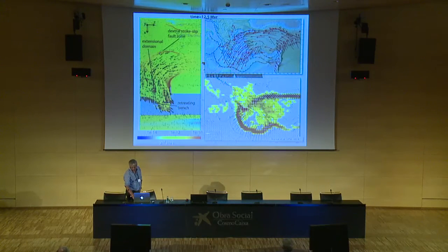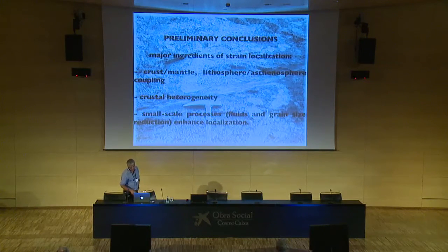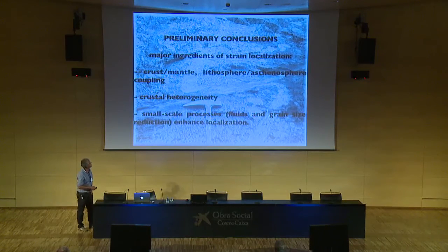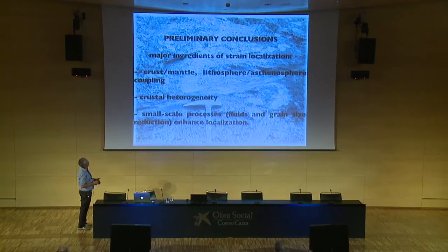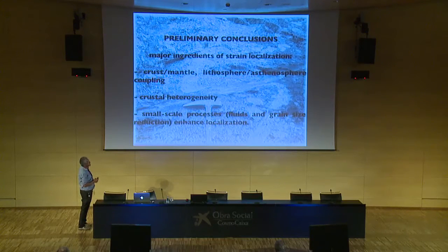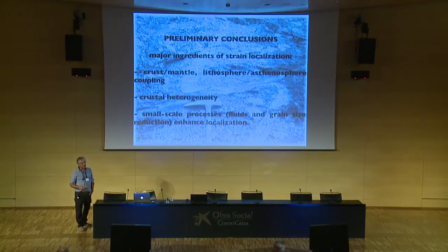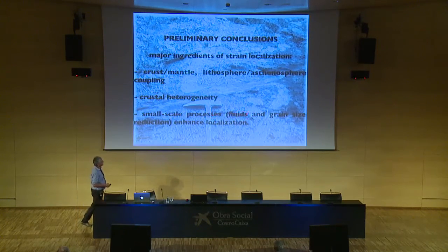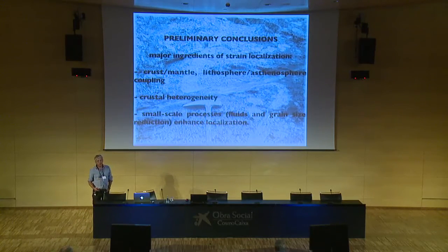As very preliminary conclusions: the major ingredients of strain localization in the continental crust are that crust-mantle, lithosphere, asthenosphere interactions are major ingredients. Crustal heterogeneity is a major ingredient as well. And small-scale processes like fluids, grain size reduction, and so on will enhance localization, but they are not at the origin of strain localization.